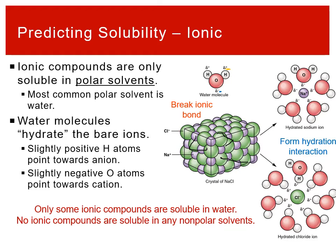When an ionic compound dissolves, all of the ionic bonds break, and what replaces them is called a hydration interaction. Because water is polar, the negative ends around each oxygen can interact with the positive cation, and the positive ends of other water molecules can interact with the anion. You break the ionic bond between the pair of ions but form hydration interactions where the ions interact with polar water molecules — that interaction with polarity is what drives solubility.